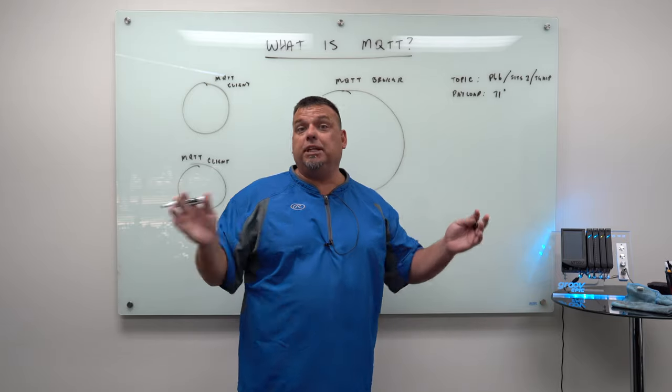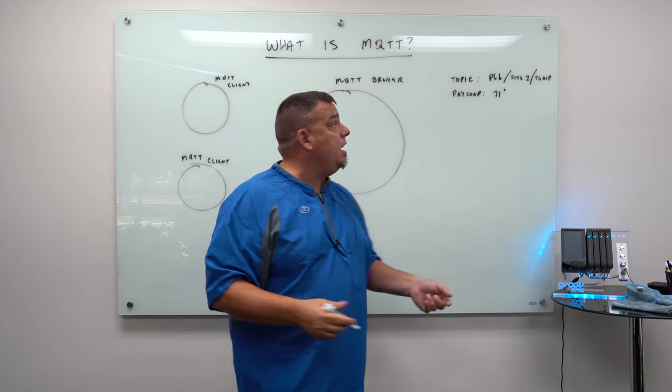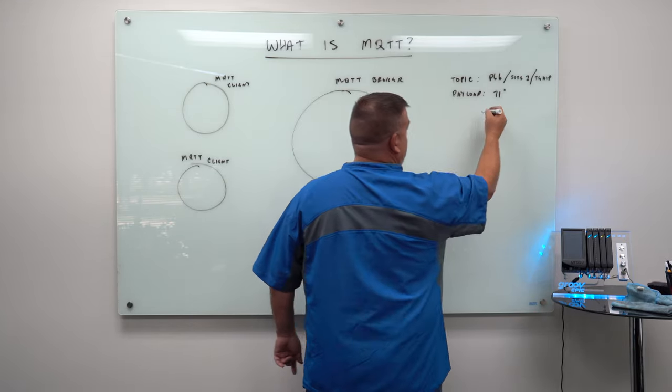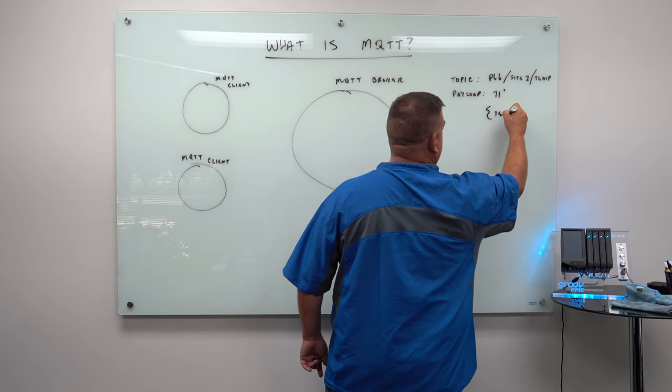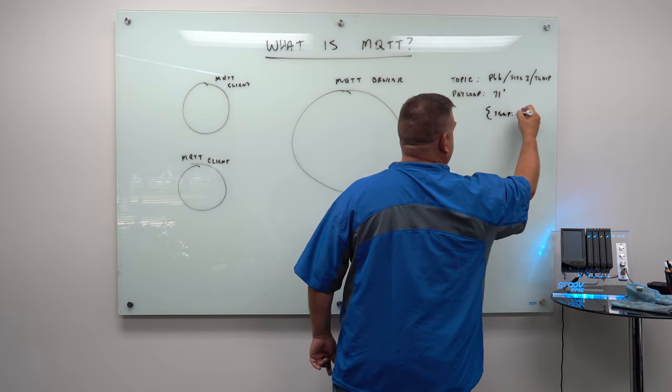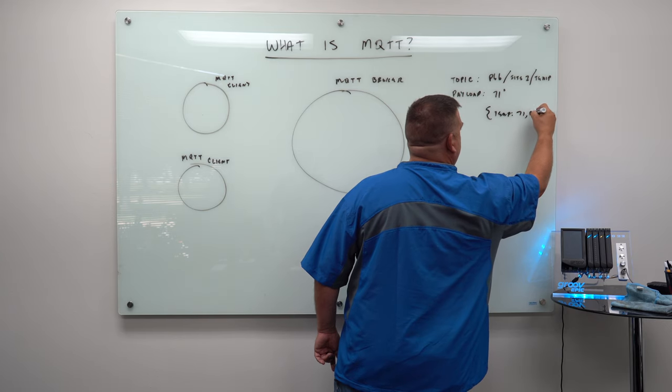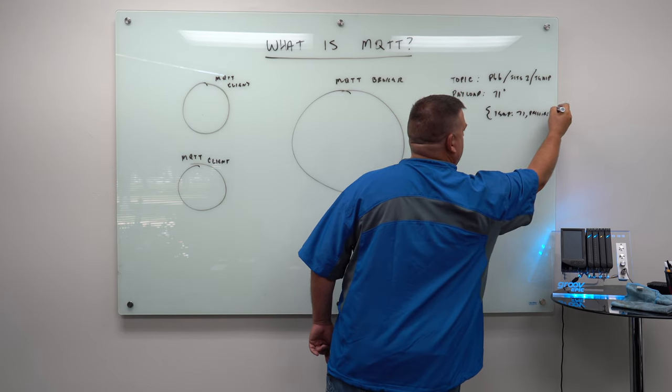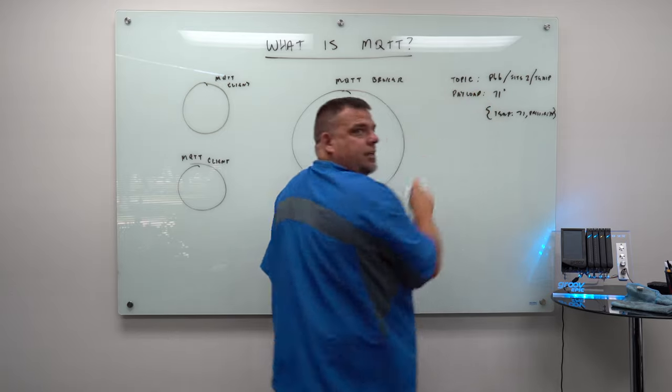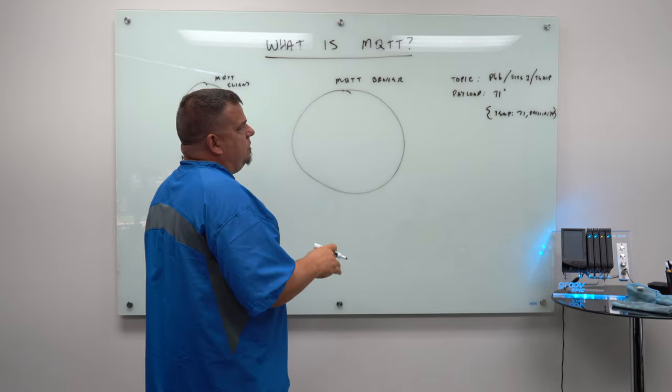Now that payload can be anything. It could be a JSON, that is I could publish any type of context in there. I could create a JSON that looks something like this, you know, temp, so key value pair temp 71 comma pressure, 14 bar, and then close the JSON. I could do that as the payload timestamp.